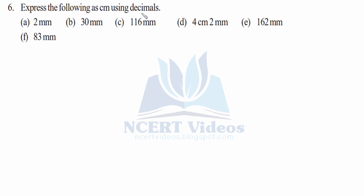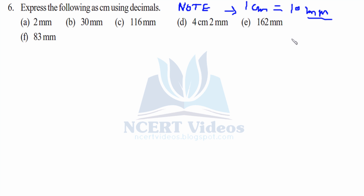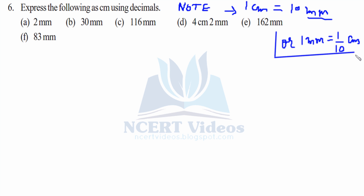Question 6: Express the following as centimeters using decimals. We have to convert them into centimeters. Remember: one centimeter equals ten millimeters — that is our conversion factor. Equivalently, one millimeter equals one over ten centimeters by the unitary method. Remember both these conversion factors. Now it is very straightforward.